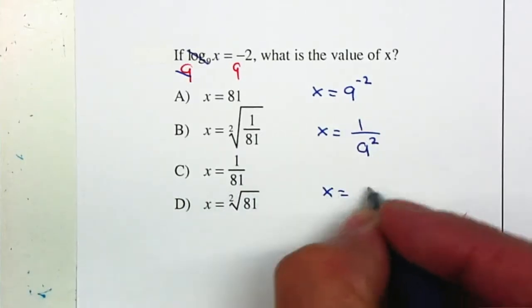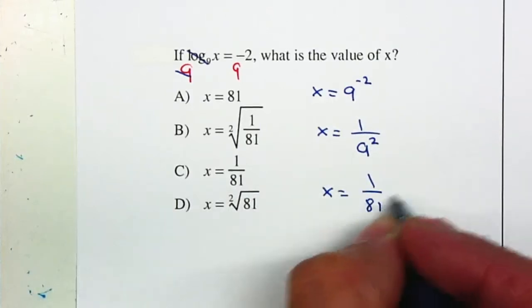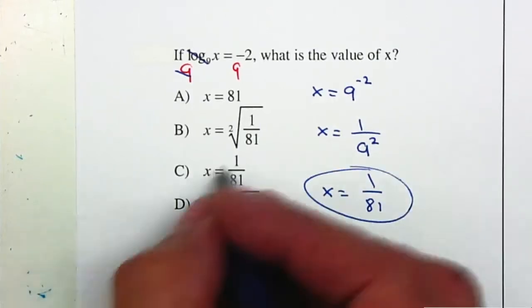So therefore, x is equal to 1 over 9 to the second power, which is 81. So your answer is letter C.